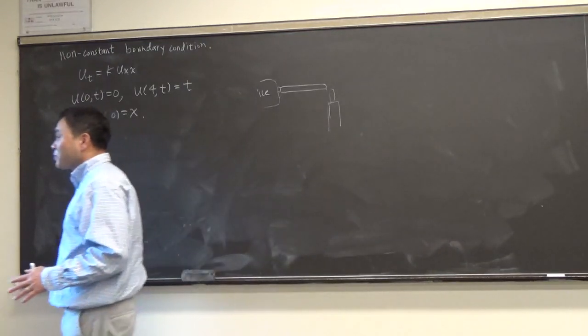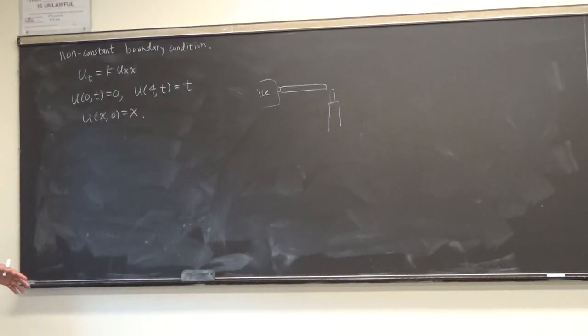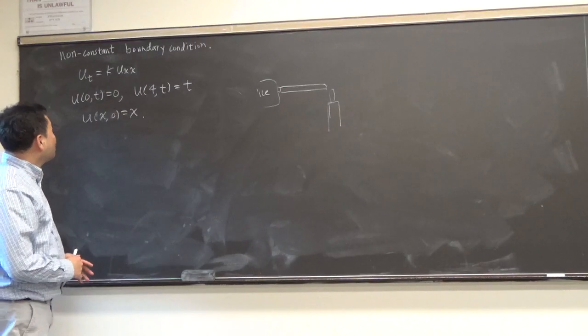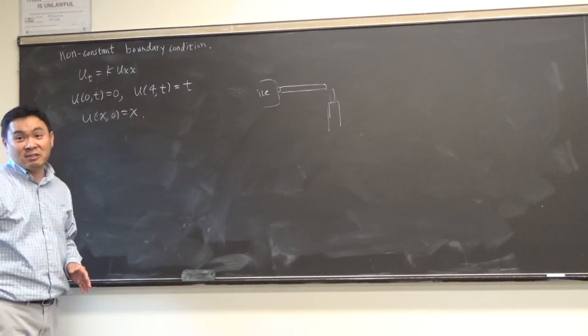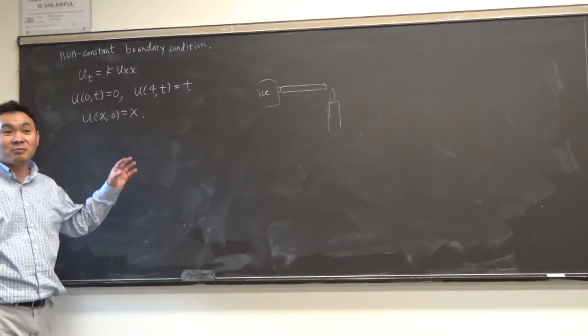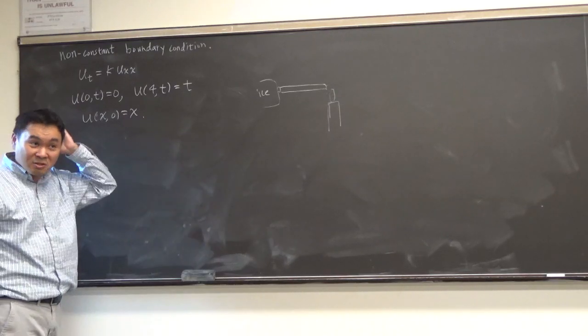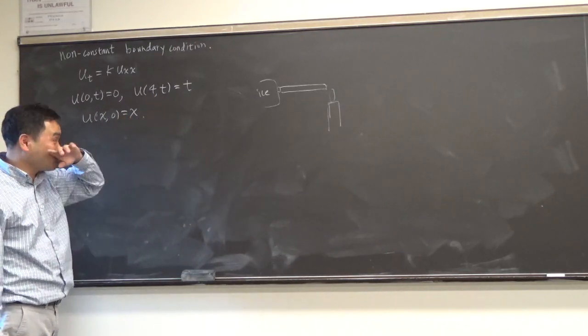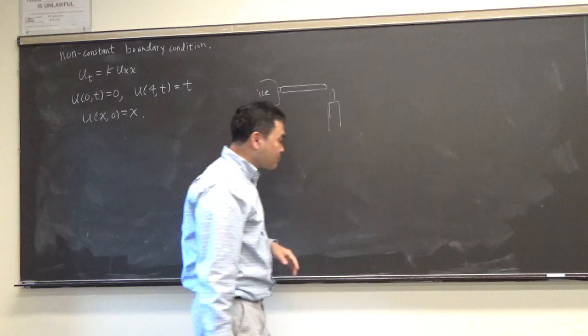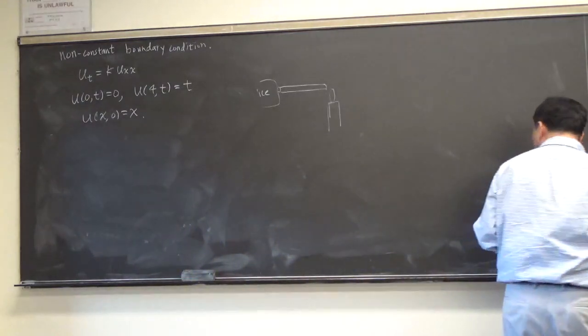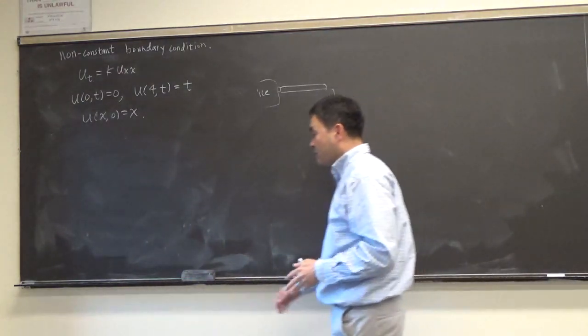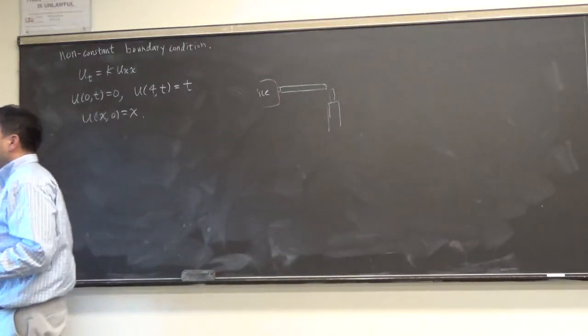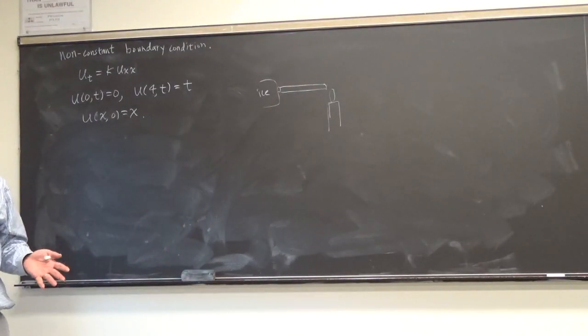Now this time the solution at time t equals infinity wouldn't become a finite value because it's going to be infinity on the right side, right? So it doesn't make sense. And I want to solve this. Again, we don't solve it. What do we do? Do we solve equations?